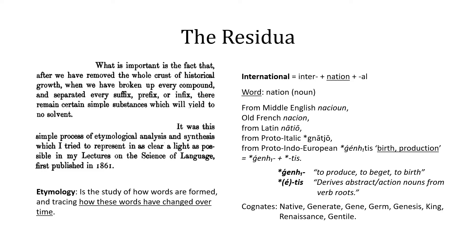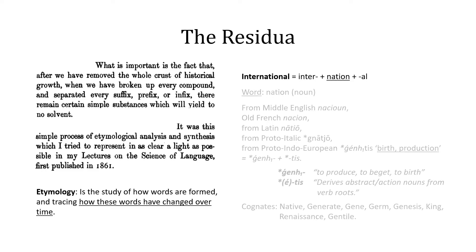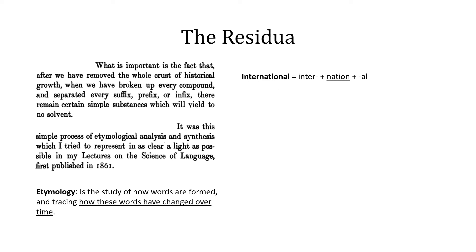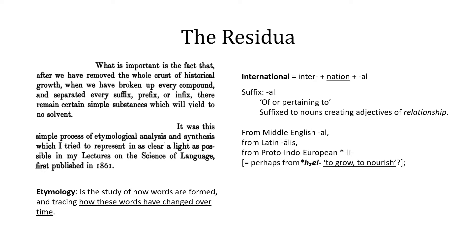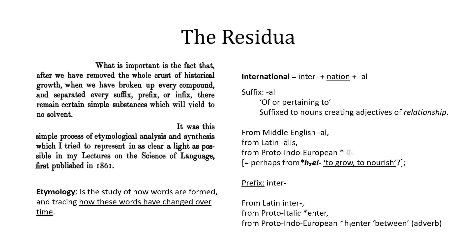No English speaker today will say that native, gentile, germ, and king refer to the same thing. But there is a sense in which they all relate in a similar way, and that relationship is being captured by the sense of the verb root. Similarly, the suffix -al derives from Middle English, from Latin -alis, going back to Proto-Indo-European -le, perhaps from el, meaning to grow or to nourish. And the prefix inter- comes from Latin inter-, going back to Proto-Indo-European henter, meaning between, back to the root hen. All of this demonstrates how a word like international has lurking behind it meanings not immediately apparent, yet contributing to the overall sense of the word.